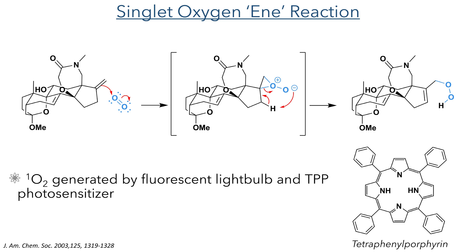With this ring installed, the researchers moved into the final stages of the synthesis. The next reaction was an oxidation using singlet oxygen, generated by oxygen gas under irradiation from a fluorescent light bulb and a triphenylporphyrin photosensitizer. Due to the electron configuration of this singlet spin state, it can undergo reactions that triplet paramagnetic oxygen cannot. In this case, the oxygen adds to the alkene to form a cyclic peroxide, which reacts in a manner analogous to the ene reaction — abstracting a hydrogen atom, forming a double bond, and opening the three-membered ring to form a hydroperoxide.